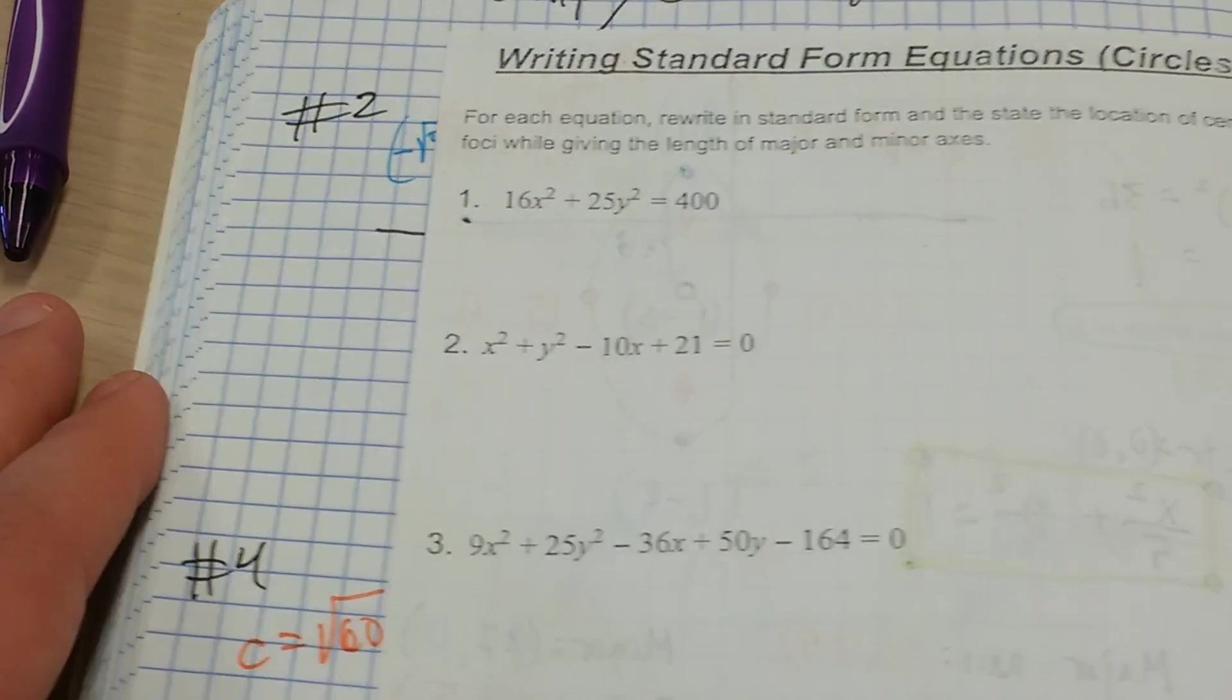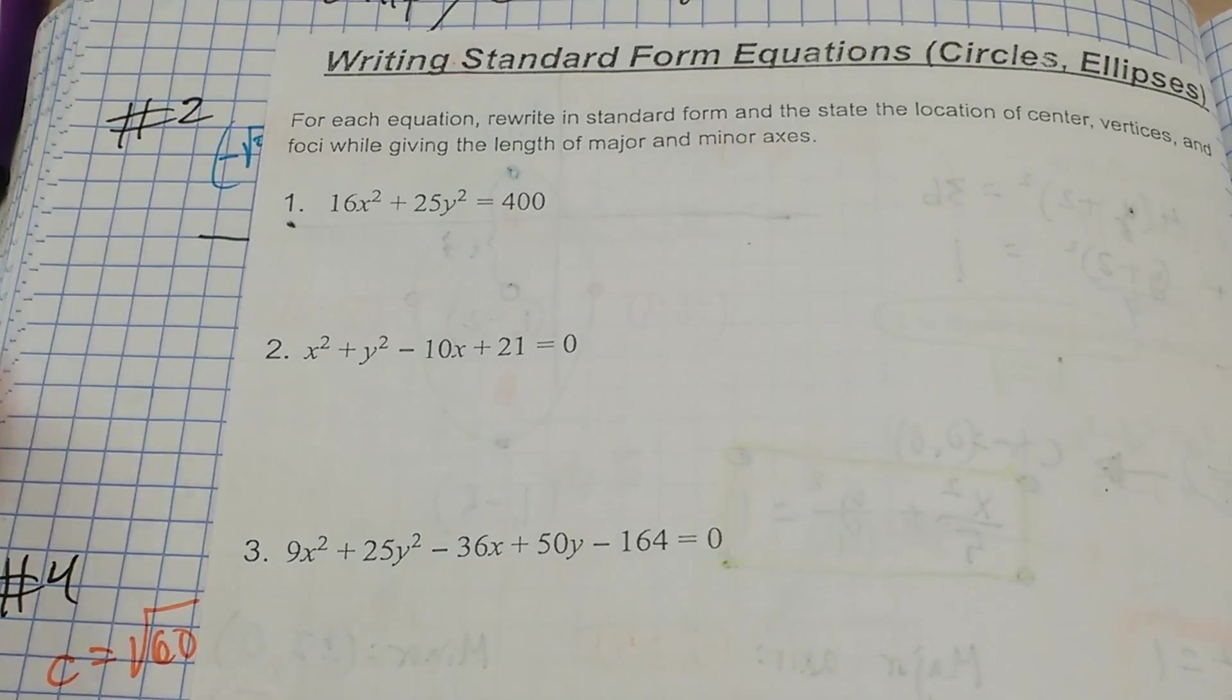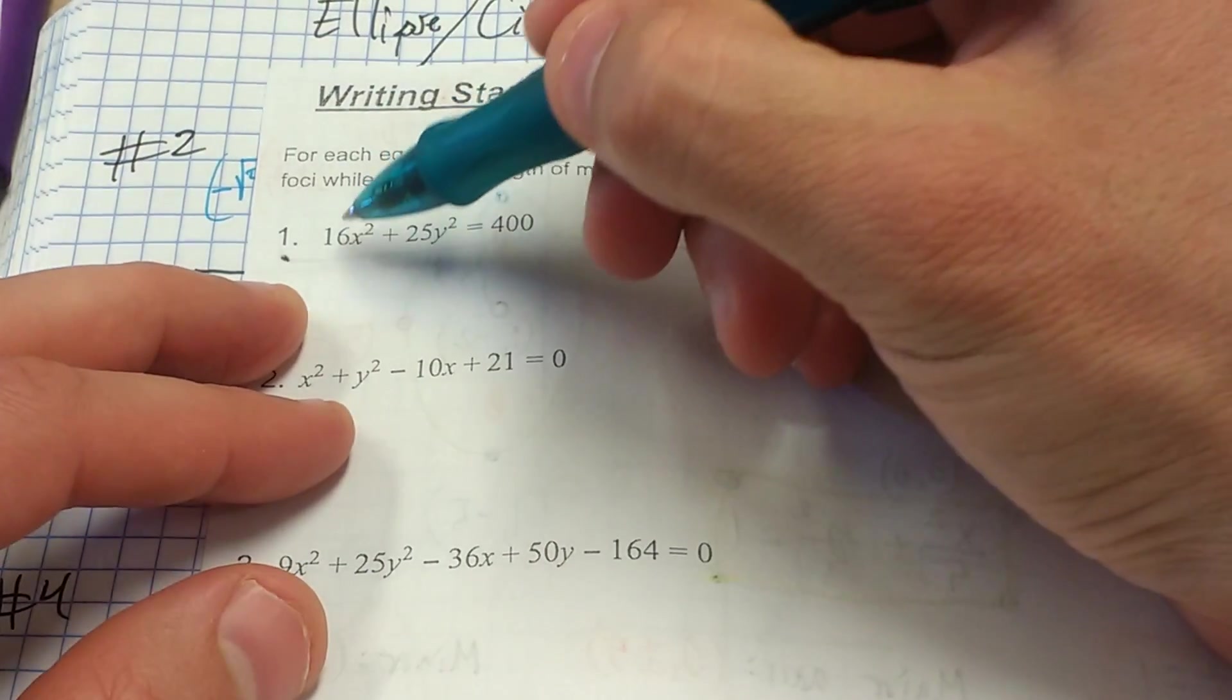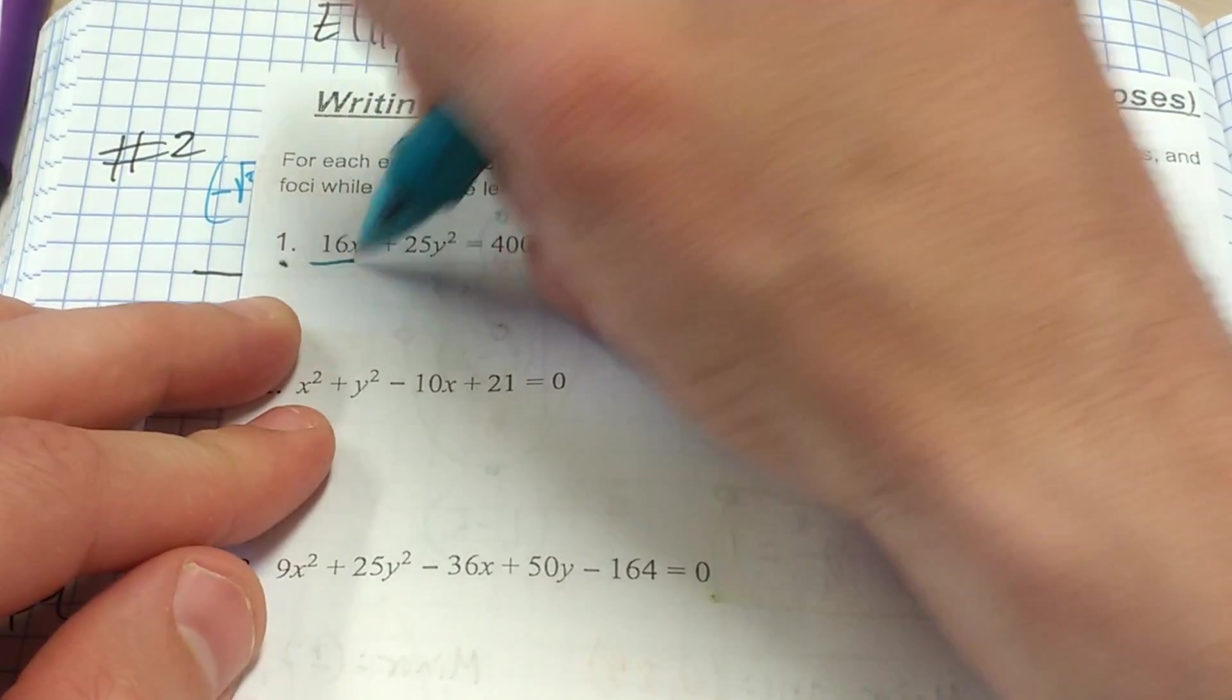Over here are the solutions to the equations, the standard forms of the circles and ellipses. In this first one, it's recognizable as an ellipse because the coefficients on x squared and y squared are different, meaning they undergo different amounts of stretch.